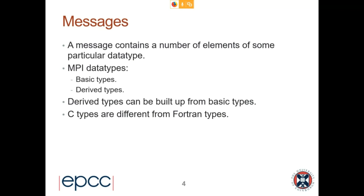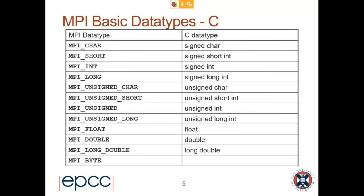The message contains a number of elements of some particular data type. The reason you need to tell MPI what your data type is: there's no obvious way in any of the languages we're looking at to determine how to interpret a message that's been received. Memory is just a stream of bytes transported between processes, and how to interpret that depends on what the data type is.